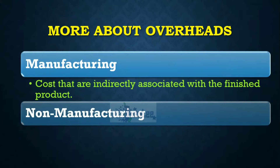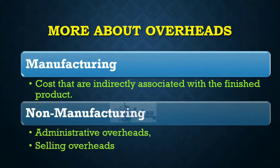Non-manufacturing overheads include administrative overheads and selling overheads. Administrative overheads — your admin expenses — cover things like your accountant's salary, your human resources salary, your receptionist salary, and depreciation for accounting machinery. Basically, administrative overheads are those general costs related to running the business.